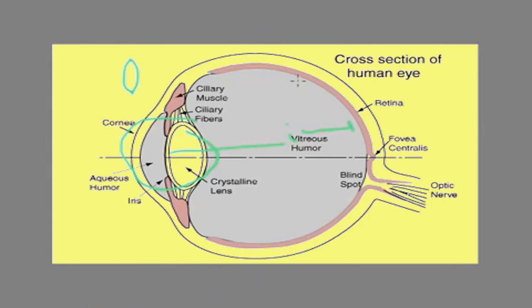And we want the image to form on the retina or the fovea centralis, that's the most sensitive part. So this image distance is fixed.